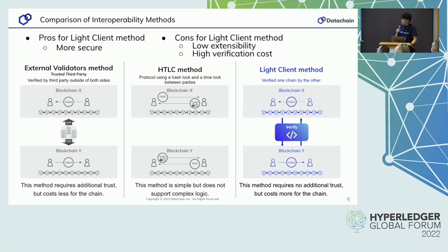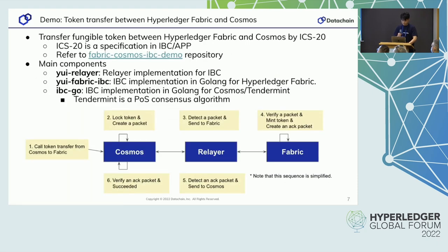There are various methods to achieve interoperability, but let me jump to the conclusion due to lack of time. The light client method is more secure, but it has low extensibility and high verification costs. Now, it's time to show you a demonstration of YUI. This demo is a token transfer using ICS-20 between Fabric and Cosmos. ICS-20 is the standard used for token transfer. You can try this demo by accessing the Fabric Cosmos IBC demo repository. The main components are the YUI relayer, YUI Fabric IBC, and IBC-Go.